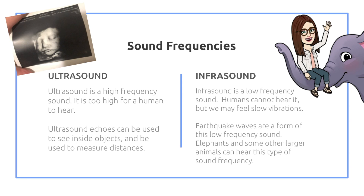Infrasound is a low frequency sound. Humans cannot hear it, but we may feel its slow vibrations. Earthquake waves are a form of this low frequency sound. Elephants and some other larger animals can hear this type of sound frequency. And that ultrasound picture is of my great-nephew — isn't he cute!